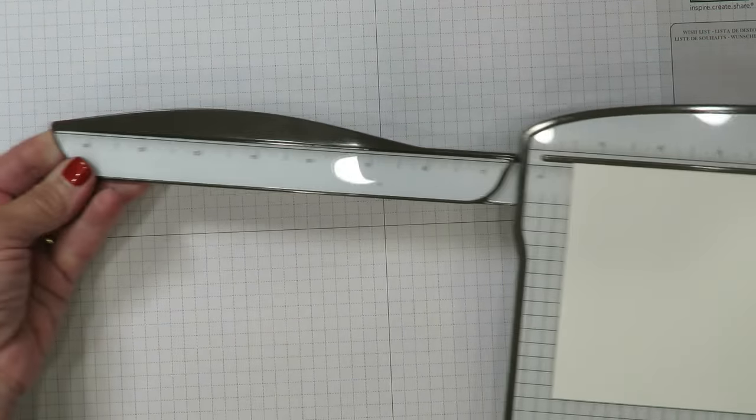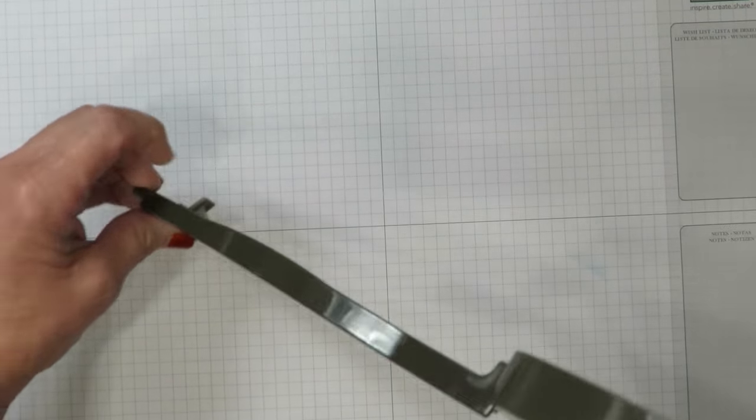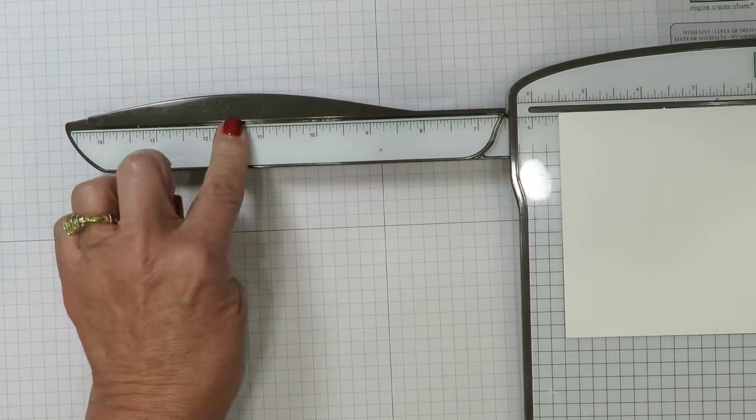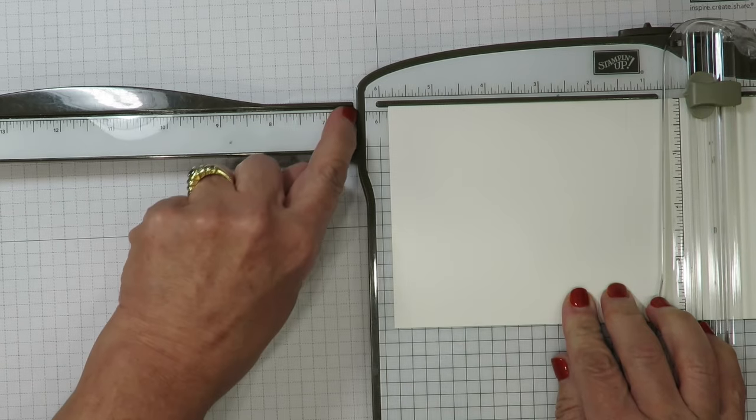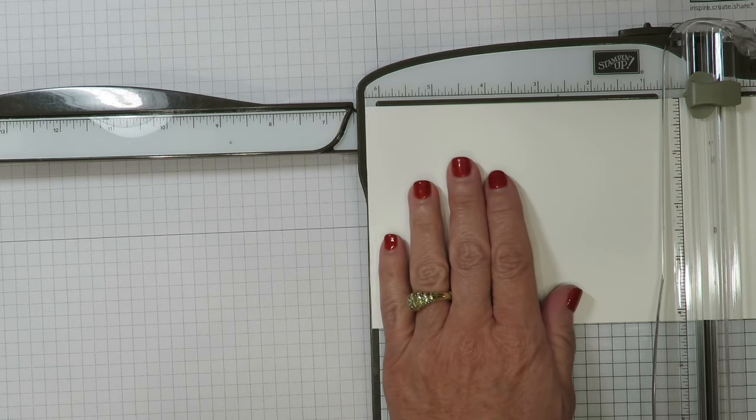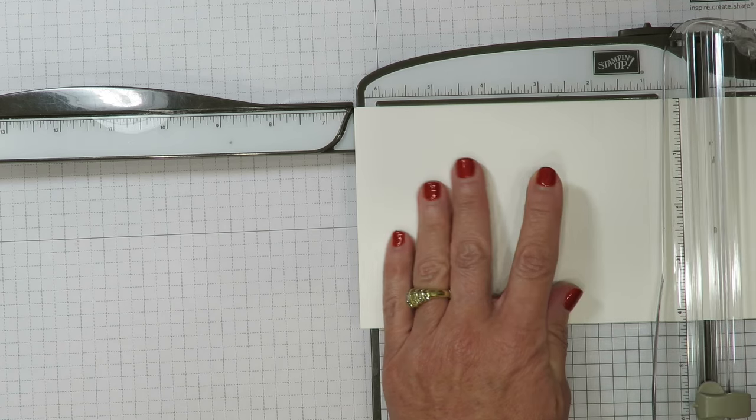And this is the beauty of the Stampin' Trimmer is that it will extend past fourteen and a half inches. And there's a little leg here on the back that will open up that provides great stability for this. You don't have to worry about it sagging. The six and a half inches is right here within the bend. I know it might be difficult to see in the video but in person it's very clearly marked. So I'm going to slide over to there and I'm going to provide one more score line.